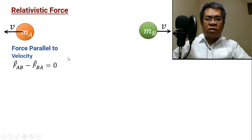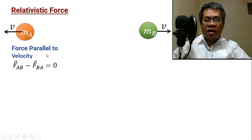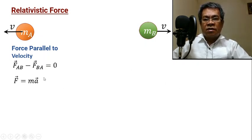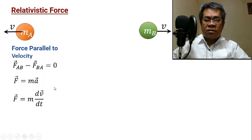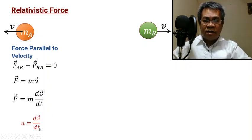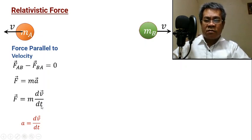Our task is to find how much force A exerts on B or B exerts on A. We will derive the relativistic force parallel to the velocity, and then the relativistic force perpendicular to the velocity. Newton's second law says force equals mass times acceleration, where acceleration is the change in velocity per time interval, so we can substitute a with dV/dt. Force is therefore mass times dV/dt.